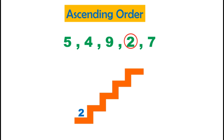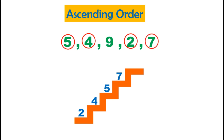Now we are left with four numbers, and the smallest among these is 4 — let's circle it. Amongst 5, 9, and 7, the smallest is 5 — let's circle it. Now between 9 and 7, the smaller number is 7 — let's circle it. We are only left with 9, so let's place it.